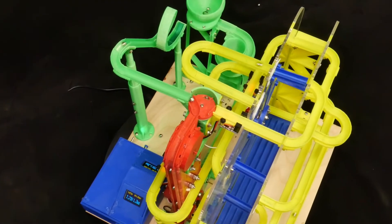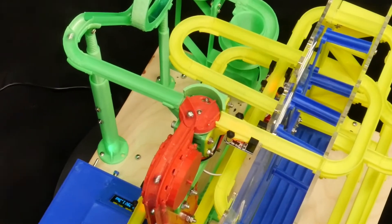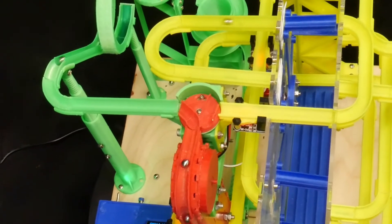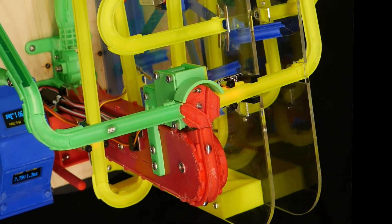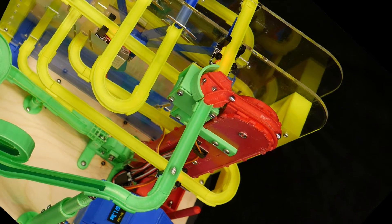At the top of the elevator, the red distributor directs marbles to either the green or the yellow track. Most marbles go to the green track because the yellow track can have no more than one marble at a time.